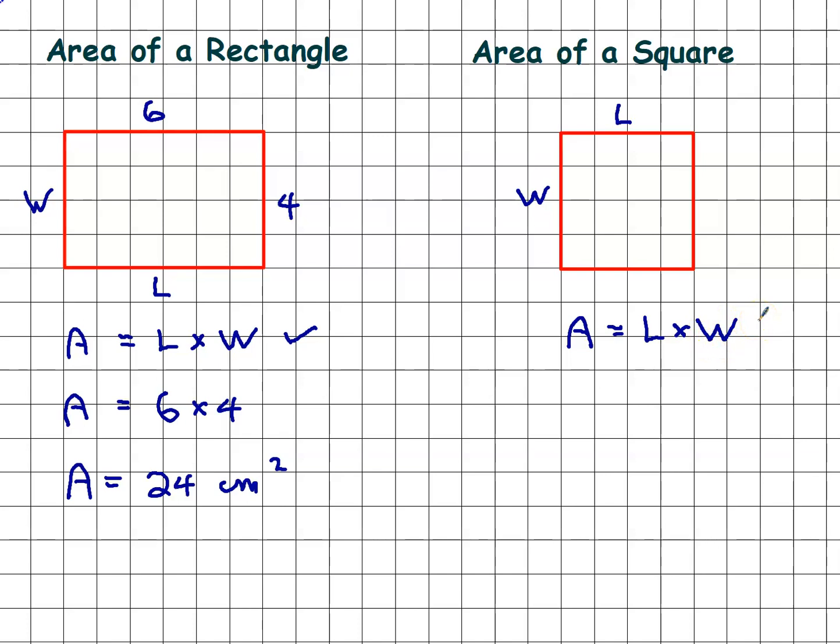But a lot of textbooks say, well, because these two sides happen to be the same, let's give them a different name and call that one S for side, that one S for side. And the formula is just side multiplied by side or side squared.